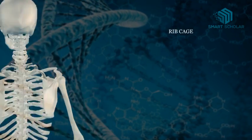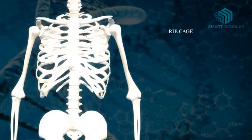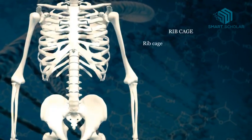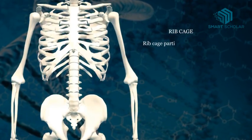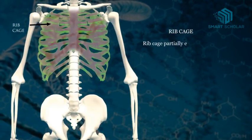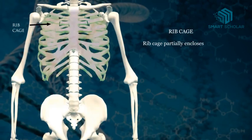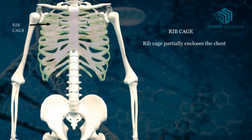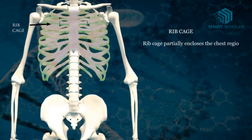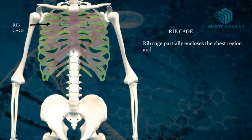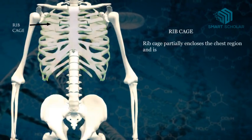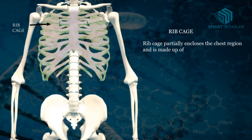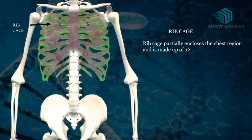Ribcage. The ribcage partially encloses the chest region and is made up of 12 pairs of ribs and a median plate-like structure called the sternum. Ribs are long curved bones joined to the spinal vertebrae to form a cage.